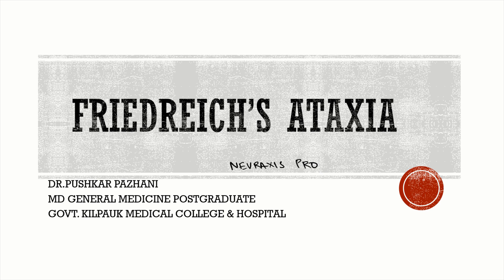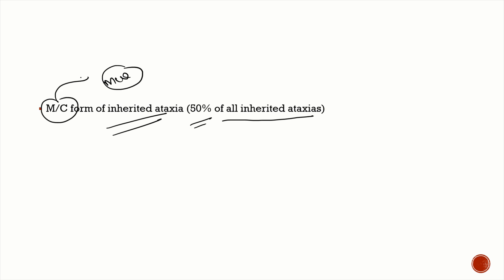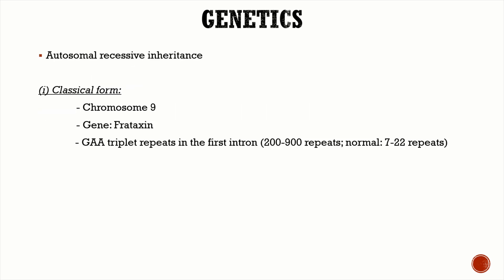Friedreich's ataxia is the most common inherited ataxia — it comprises 50% of all inherited ataxias, so this is a very important MCQ point. It is an autosomal recessive inheritance, in contrast to spinocerebellar ataxias and episodic ataxias which have autosomal dominant inheritance.